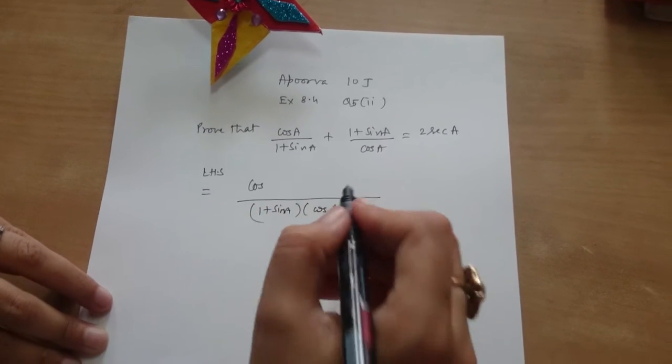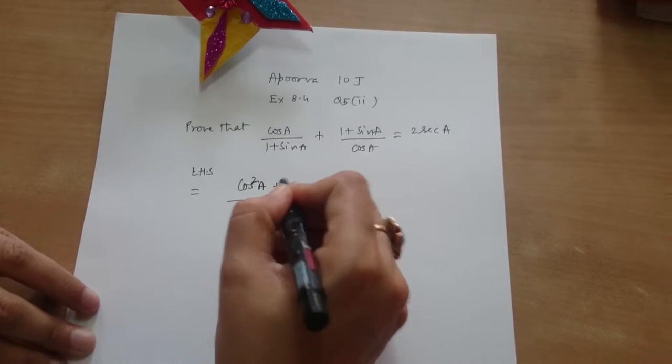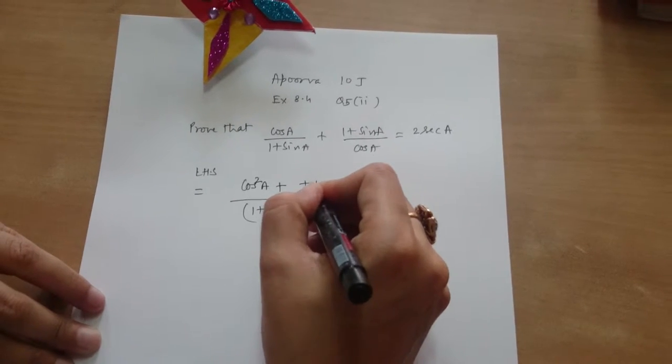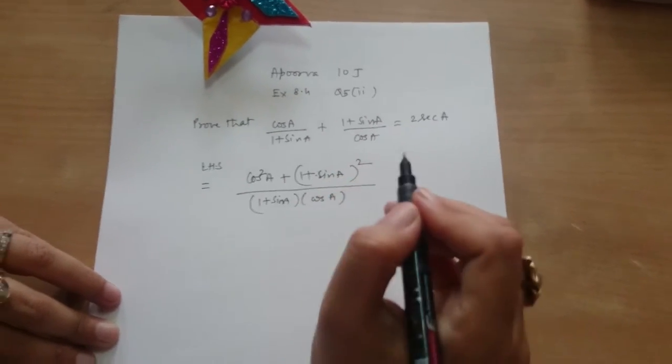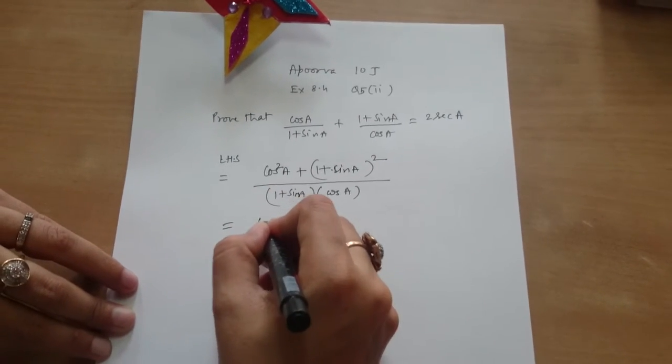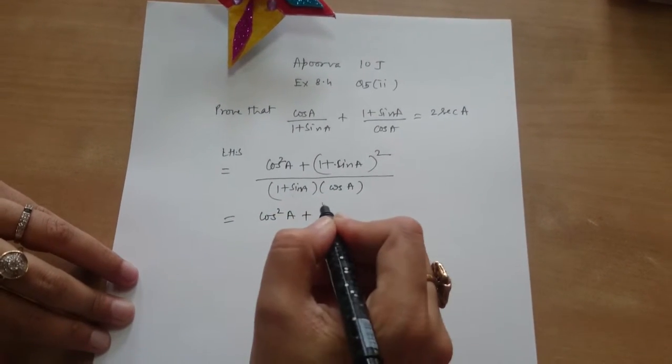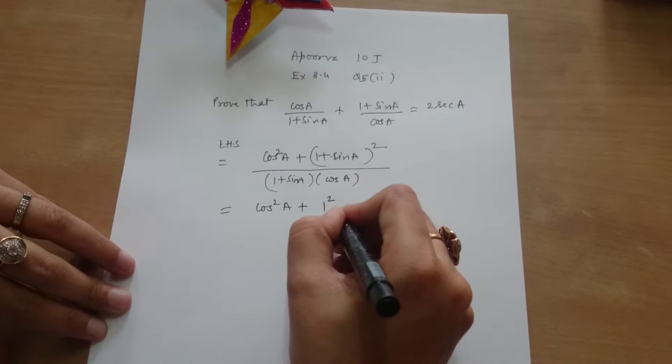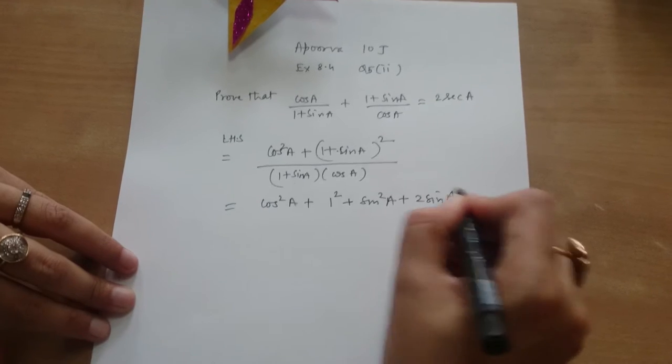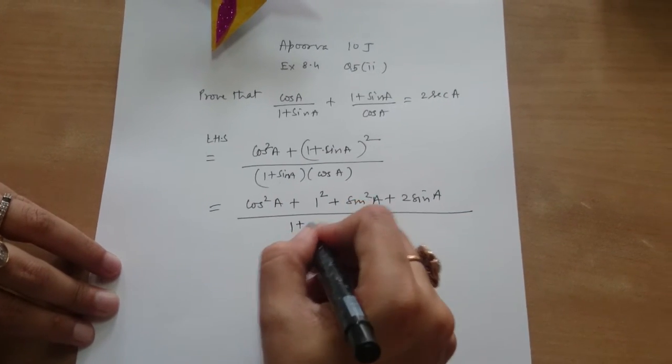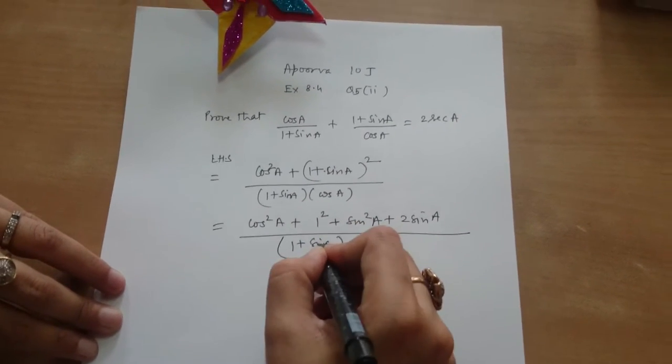In the numerator it will be cos square A plus 1 plus sin A whole square. This is equal to cos square A plus 1 square plus sin square A plus 2 sin A divided by 1 plus sin A into cos A.